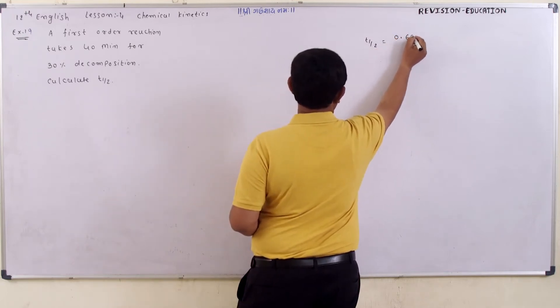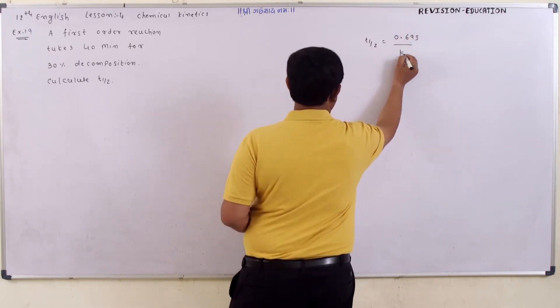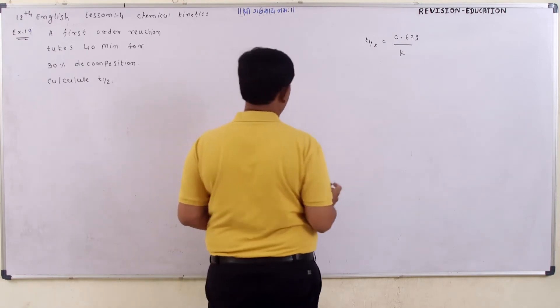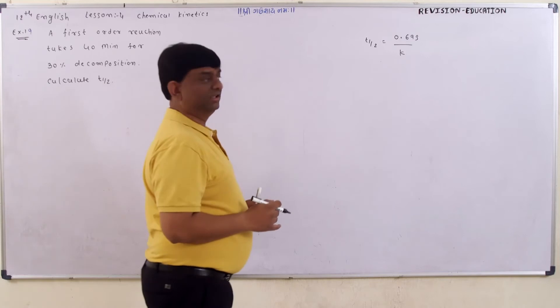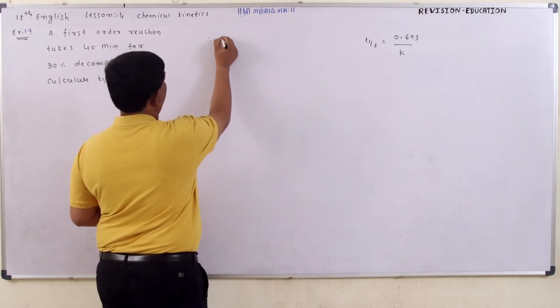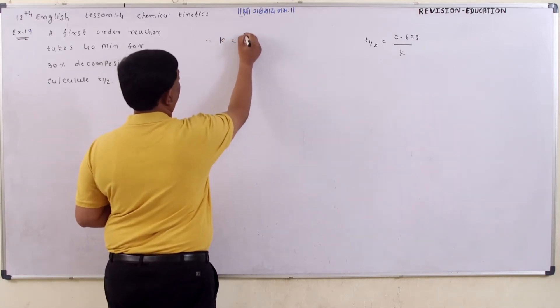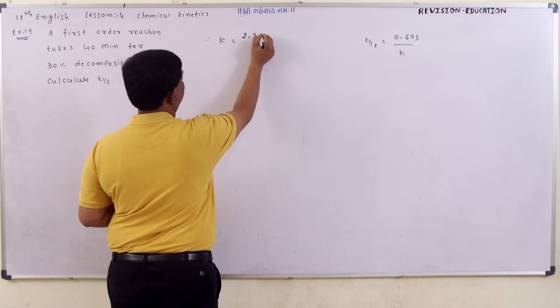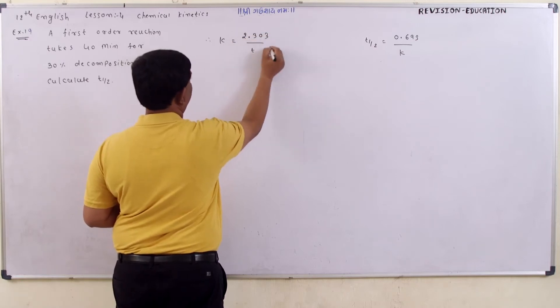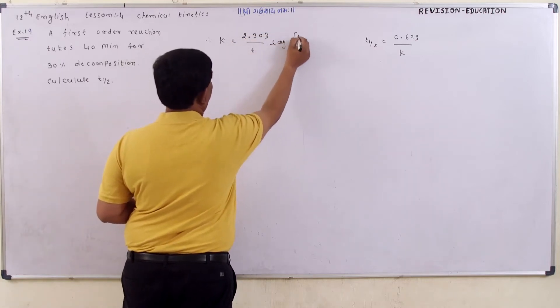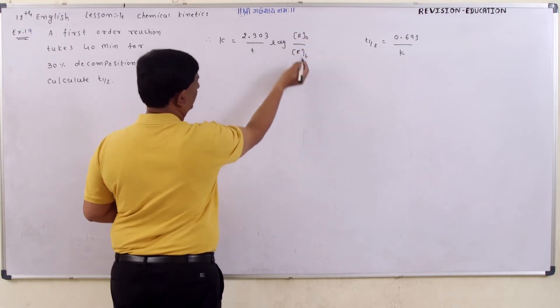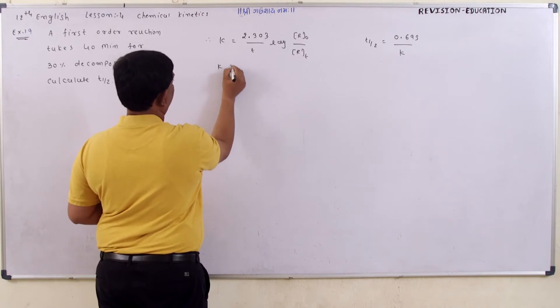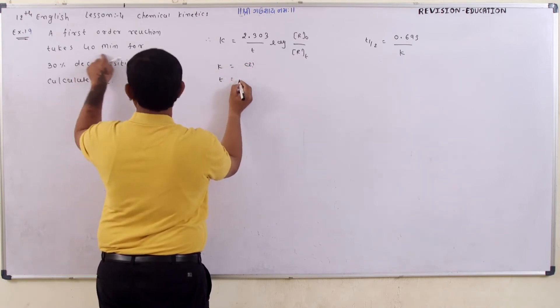The formula is 0.693 divided by k equals 2.303 divided by t times log of r0 by rt. We have to first of all calculate k. Time t is given as 40 minutes.